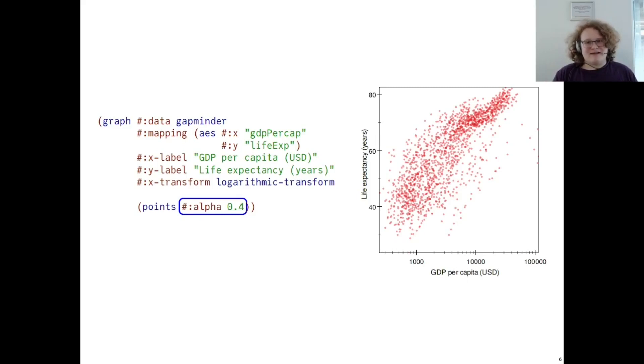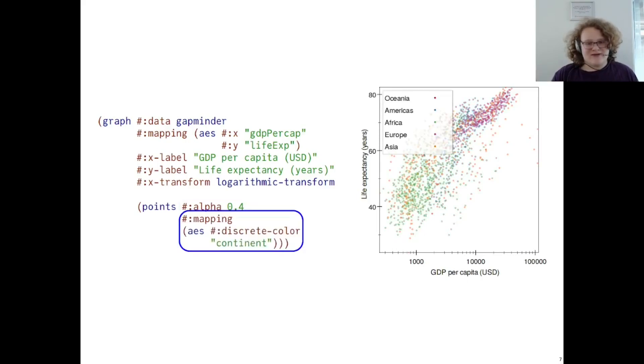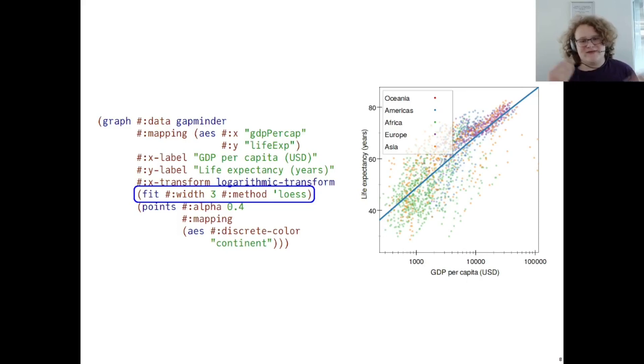However, sometimes you want to map these elements non-statically. For example, if you wanted to create a colored legend. Graphite makes this easy with the idea of the aesthetic mapping. Here, we map the color aesthetic of the points renderer to the variable continent. This then assigns each continent a unique color and changes the point color according to where it came from. In addition, Graphite's renderers are additive, so we can specify a fit renderer with its own set of aesthetic elements, and it is drawn alongside our points.